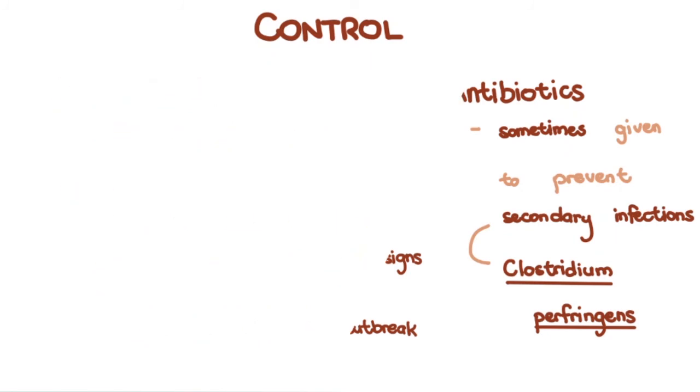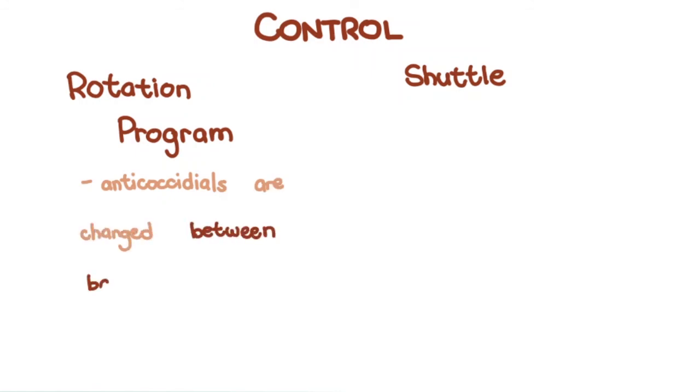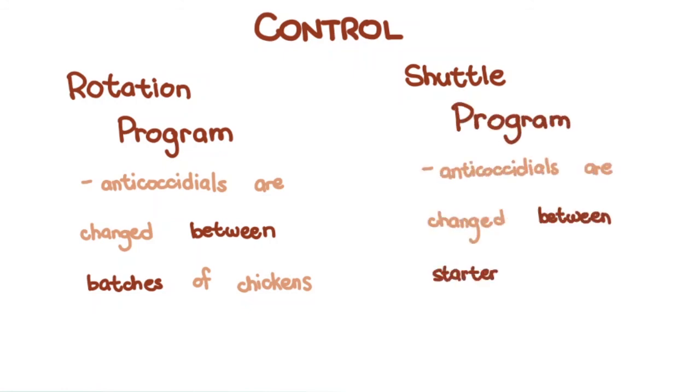The emergence of drug resistance is a problem with continuous use. To reduce the rate at which this is happening, rotation and shuttle programs on anticoccidials are done. A rotation program is one where the anticoccidials are changed between batches of chickens, whereas a shuttle program is one where the anticoccidials are changed between the starter and grower phases of the chicken's life.